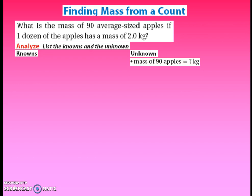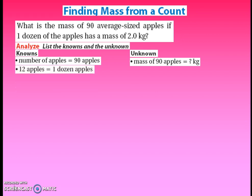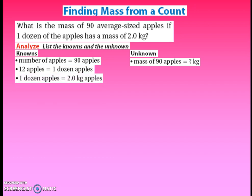We know we're starting with 90 average-sized apples. We also know that dozens relate to kilograms. One dozen apples is 12 apples — again, that's a fixed quantity. And from this problem, one dozen apples has a mass of two kilograms. We can take this information and, through dimensional analysis, get from one set of units to a different set of units.